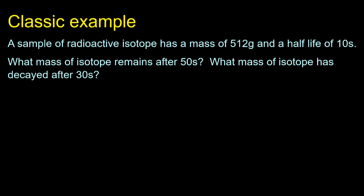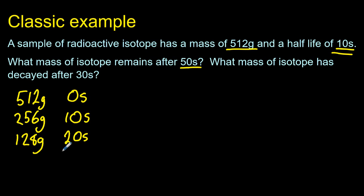Let's look at some classic questions. A sample of radioactive isotope has a mass of 512 grams, 10 second half-life. What mass of isotope remains after 50 seconds? I like to write it out in these little tables. At zero seconds, there's 512 grams. After 10 seconds, there's going to be half as much. After another 10 seconds, there's going to be half as much remaining again. Another 10 seconds is going to half my amount again. And finally, after 50 seconds, I'm going to have 16 grams remaining.